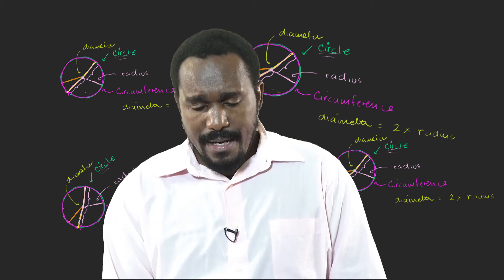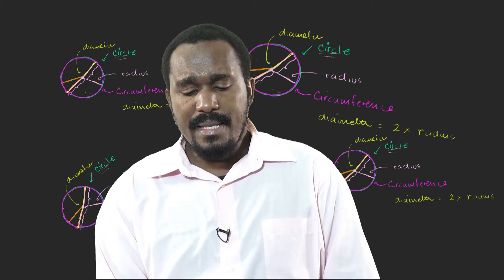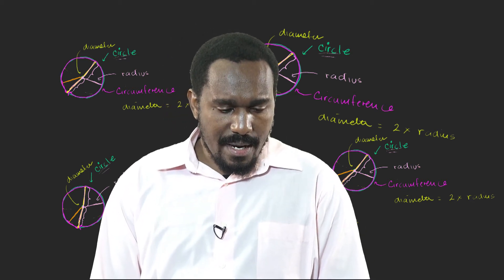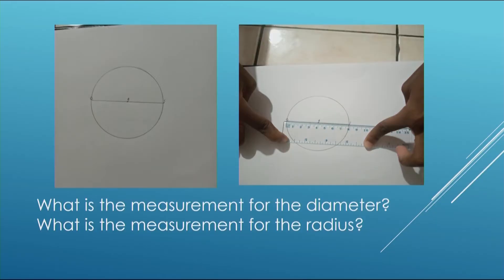To briefly explain, here is the illustration. The first thing is you draw a circle, which has been done here. The second thing is drawing the diameter. You can even mark the points: this is A, the center point is B, and the last point is C.